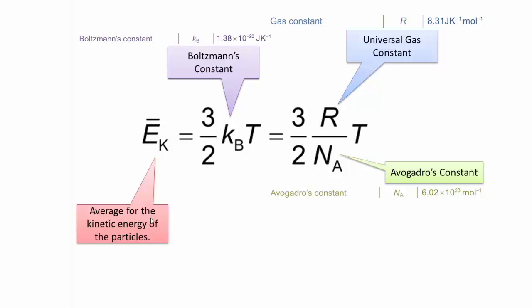You may notice that these equations are basically the same thing. If I highlight on the left side, you have kB there. On the right side, you have R, NA. These are interchangeable. Basically, because kB, Boltzmann's constant, is equal to R over NA, the universal gas constant divided by Avogadro's constant.